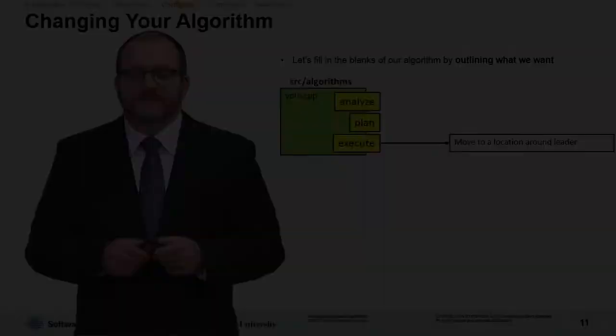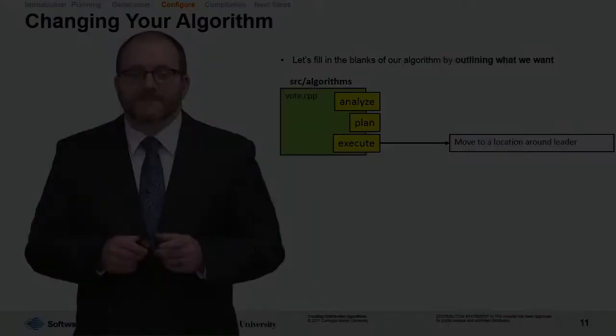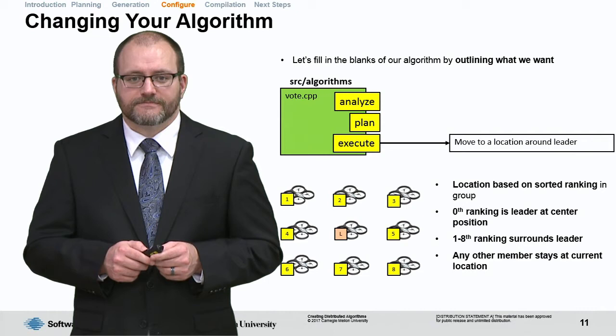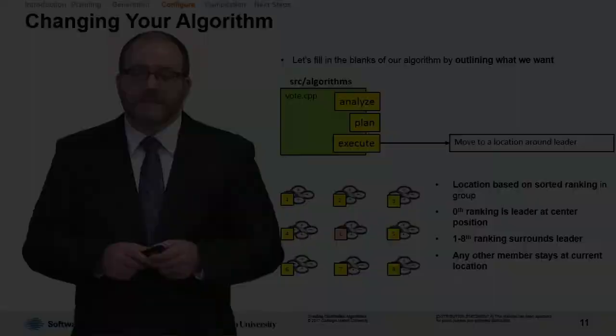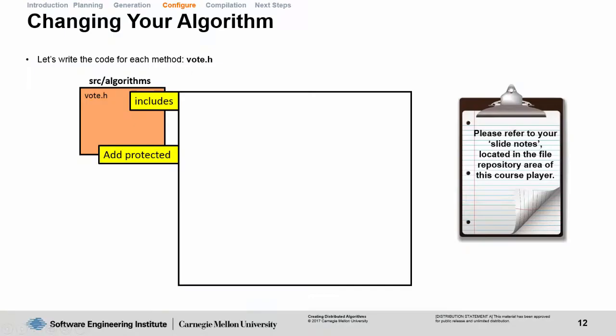This may sound daunting, so let's visualize what exactly we're going to implement in the vote algorithm. Location is going to be based on a sorted ranking in the allies group. The zeroth ranking is the leader at the center position. Everyone else will surround the leader. Any other agent not in the zero through eighth ranking will stay wherever they're currently at.